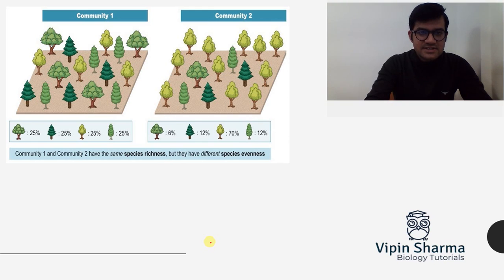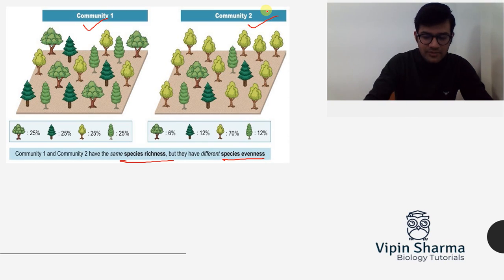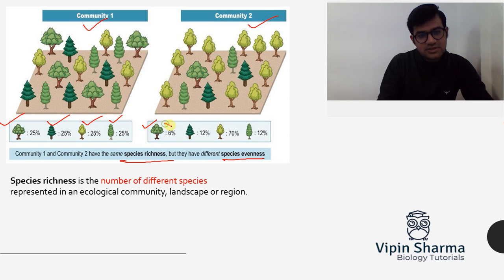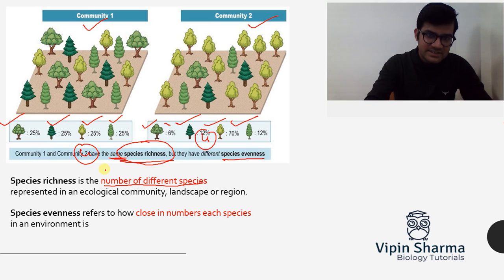From this example, you will get to know about two important terms: species richness and species evenness. Comparing community one and community two, if there are four types of plant species present in each community, then species richness is the same for both — because species richness refers to the number of different species, which is four in each case.